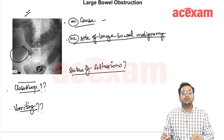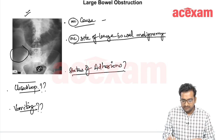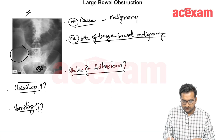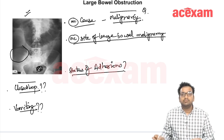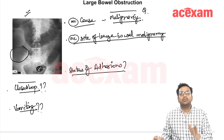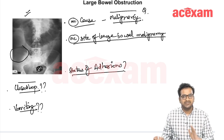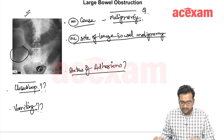What is the most common cause of large bowel obstruction? It is malignancy. Malignancy is the most common cause of large bowel obstruction, whereas the most common cause of small bowel obstruction is post-operative adhesion.